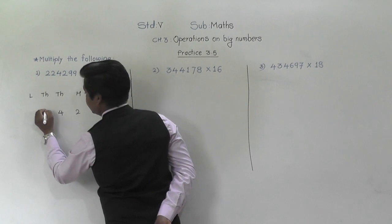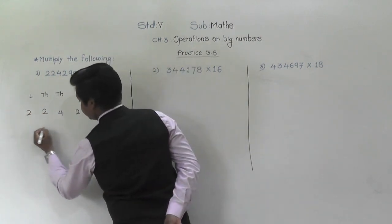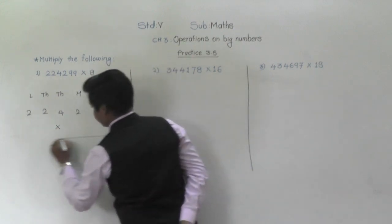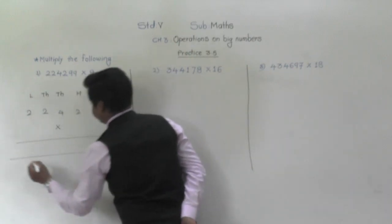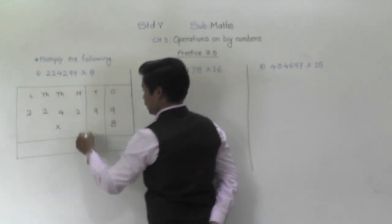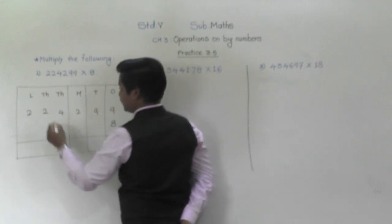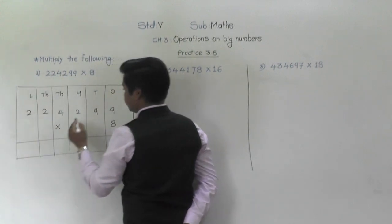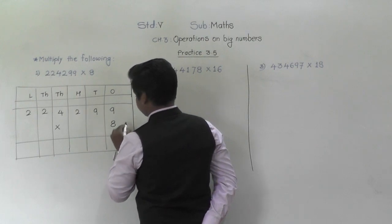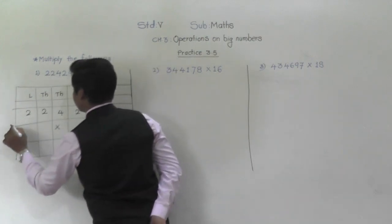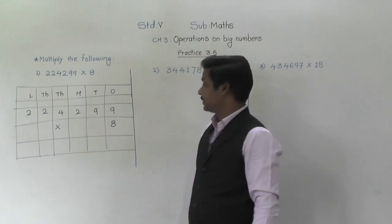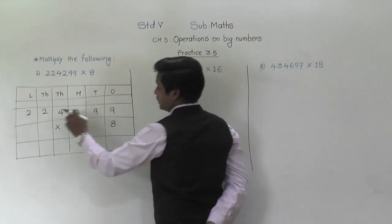So we write the number 2,24,299 multiplied by 8. You have to use a ruler to make the boxes for the place values. Okay, this way your boxes will be there. You have to use a ruler to make the boxes. Let's multiply by 8 to this number.